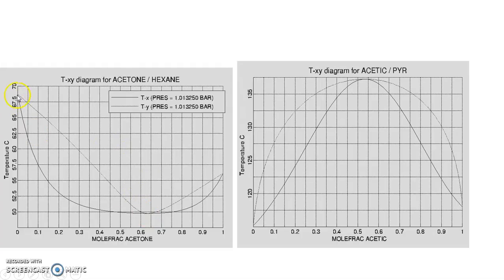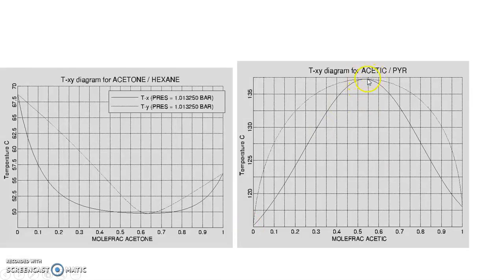The impact on the TXY diagram is as follows: when there is a positive deviation we have a minimum boiling azeotrope — the boiling point of component 2, the boiling point of component 1, and the azeotropic boiling point is the lowest of the three. This is known as the minimum boiling azeotrope. For the other system with negative deviation, we have a maximum boiling azeotrope, where the azeotropic temperature is the highest, with an azeotropic composition of roughly 0.55.